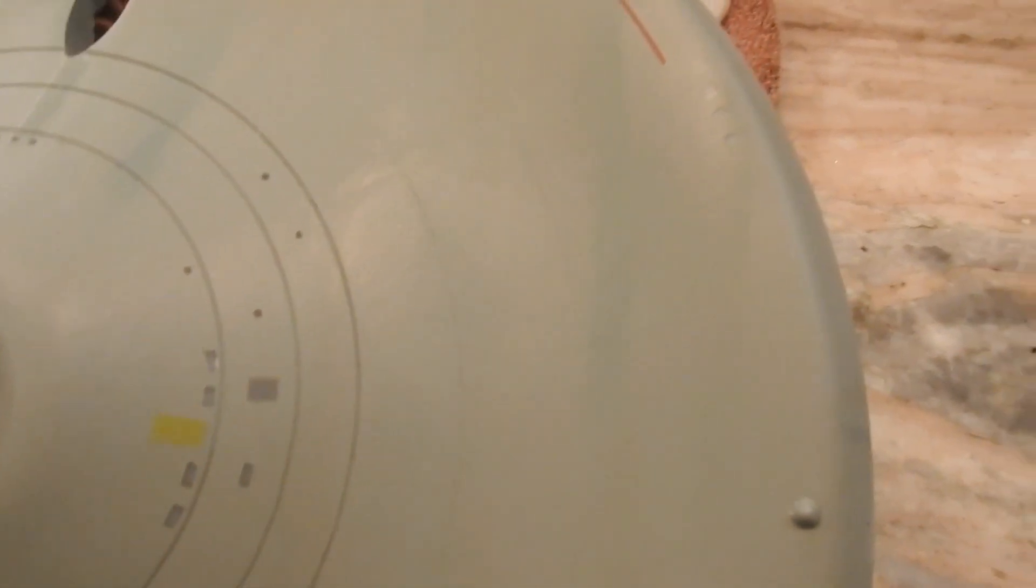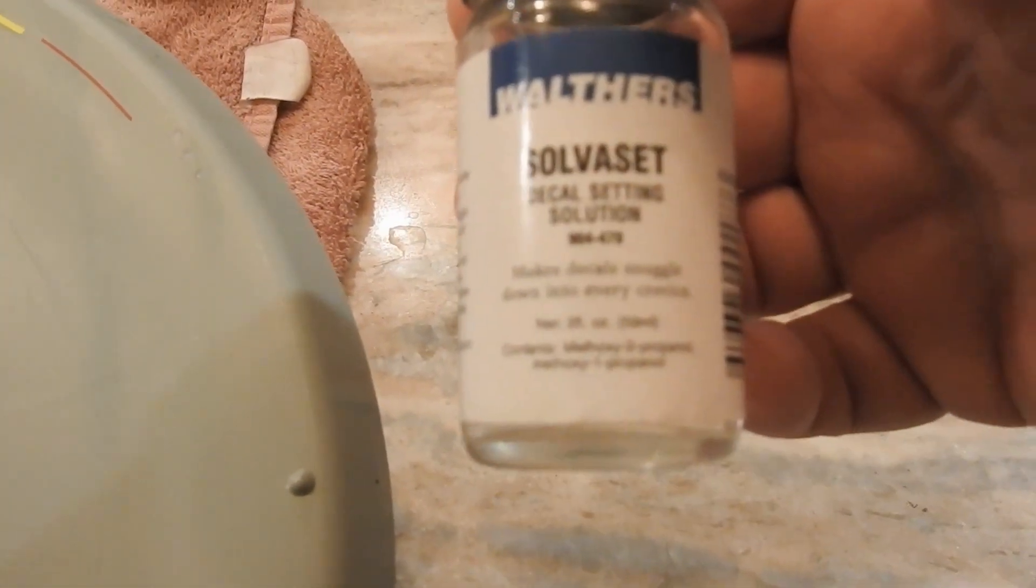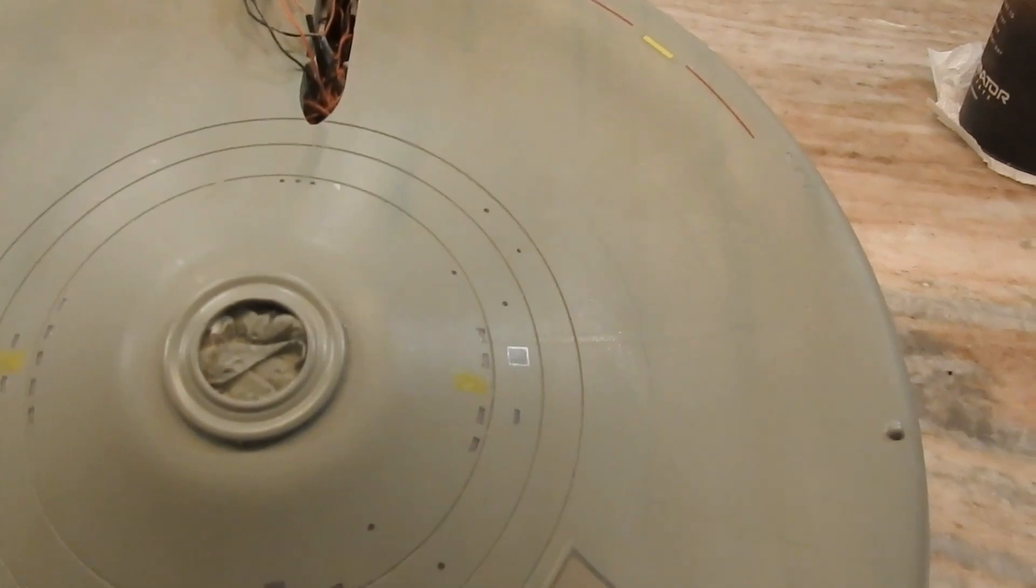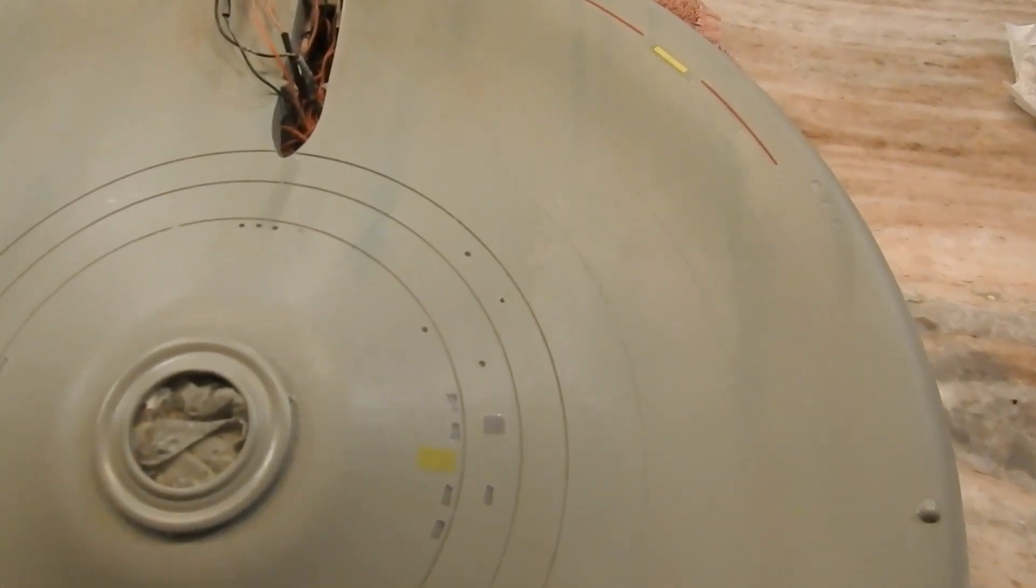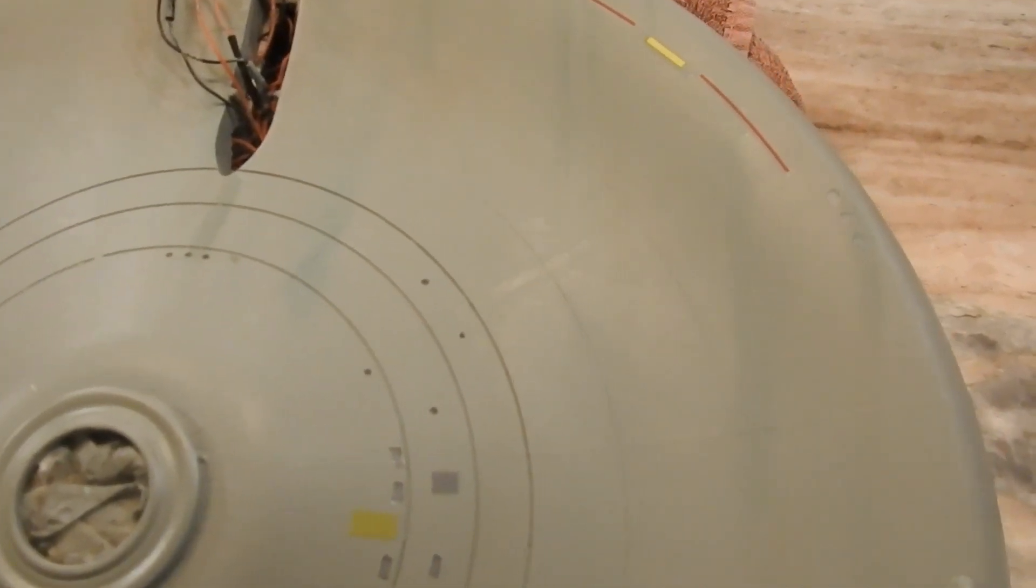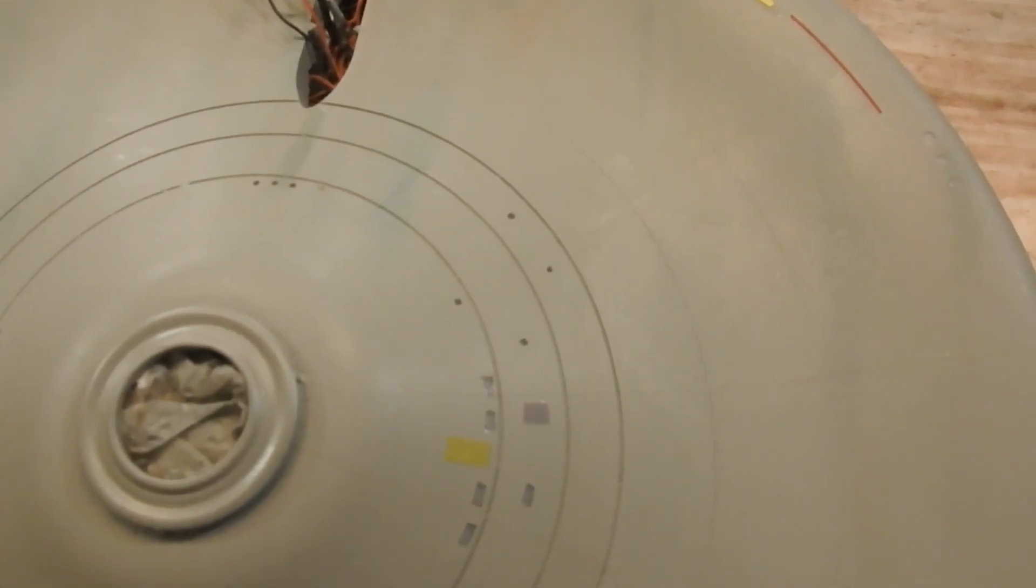Now I have to admit, when I first started putting them on I was using the Microsol. But now I've gone to this Walther's Solvaset, and it really laid it down. Because I had some spots that just were not setting down with the Microsol. I applied a couple applications of the Walther's and it settled it down.